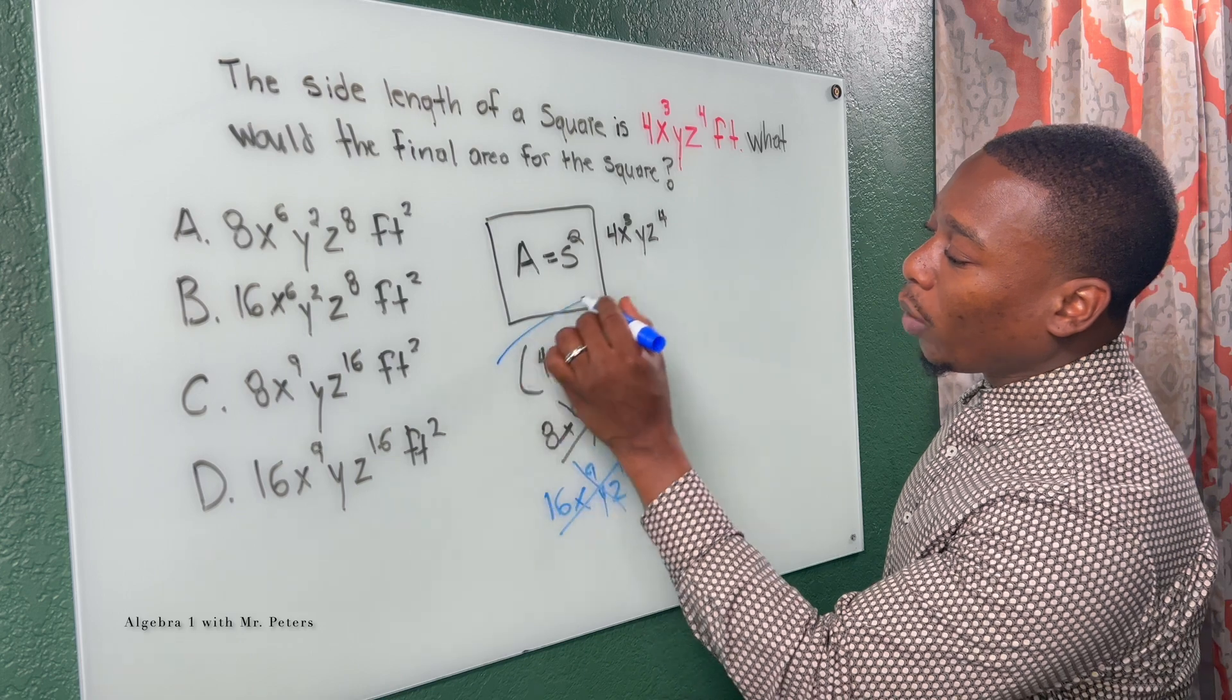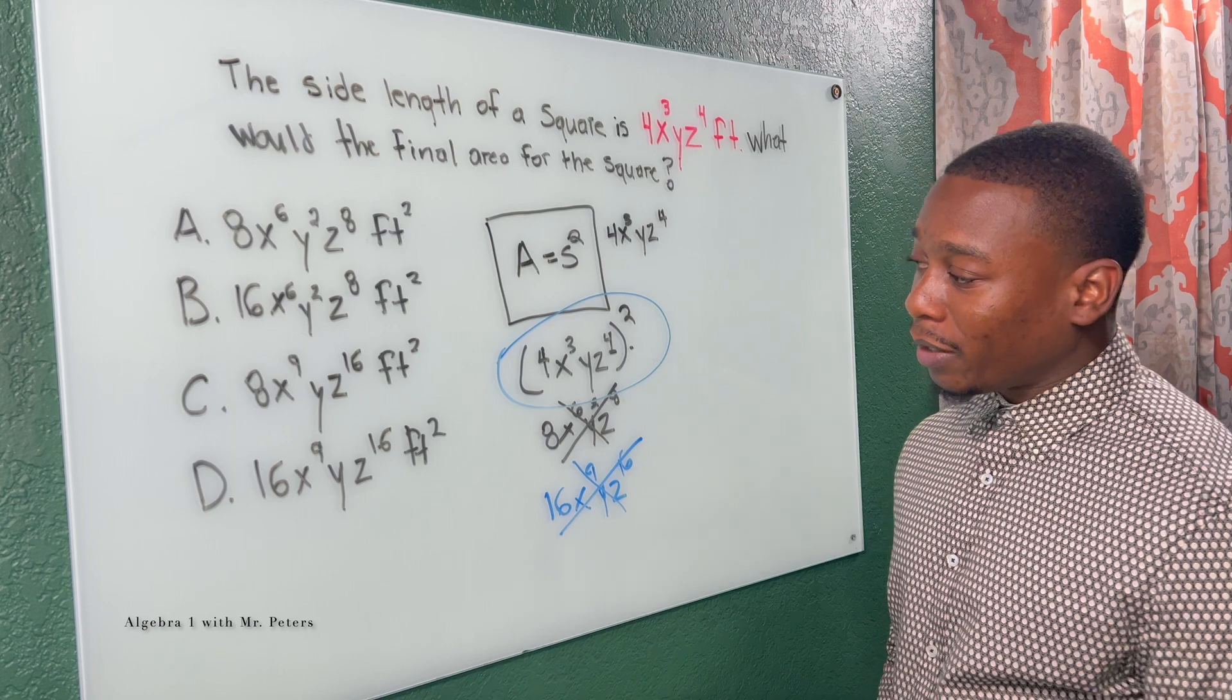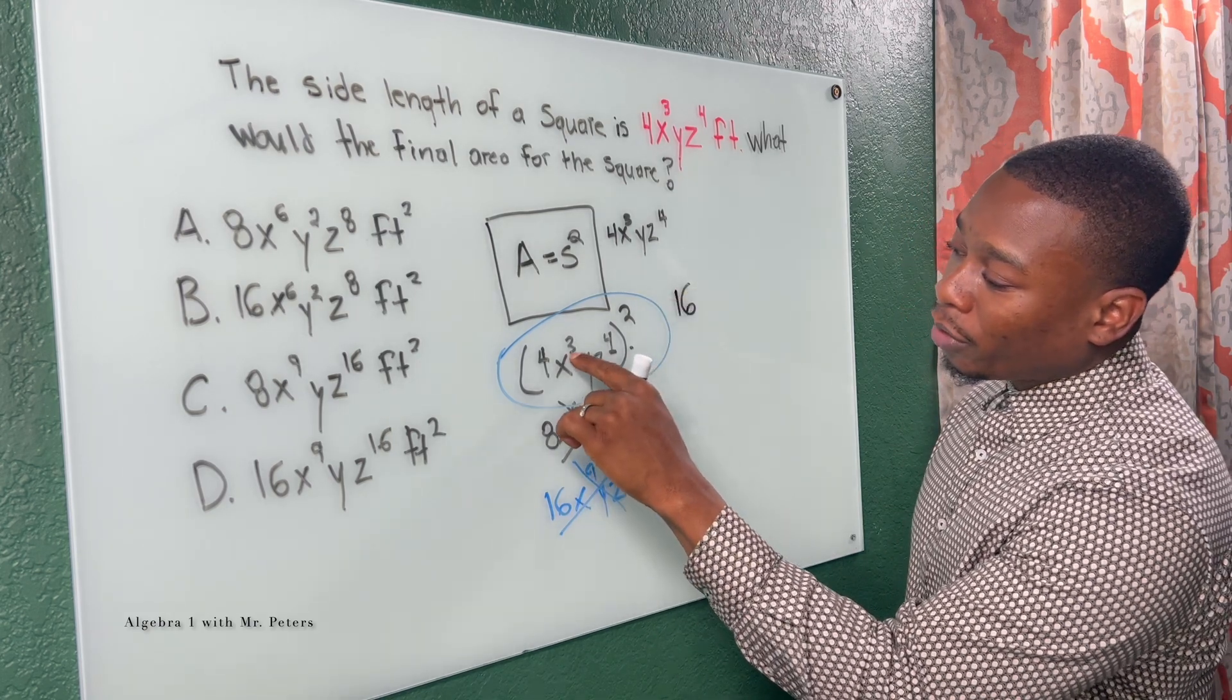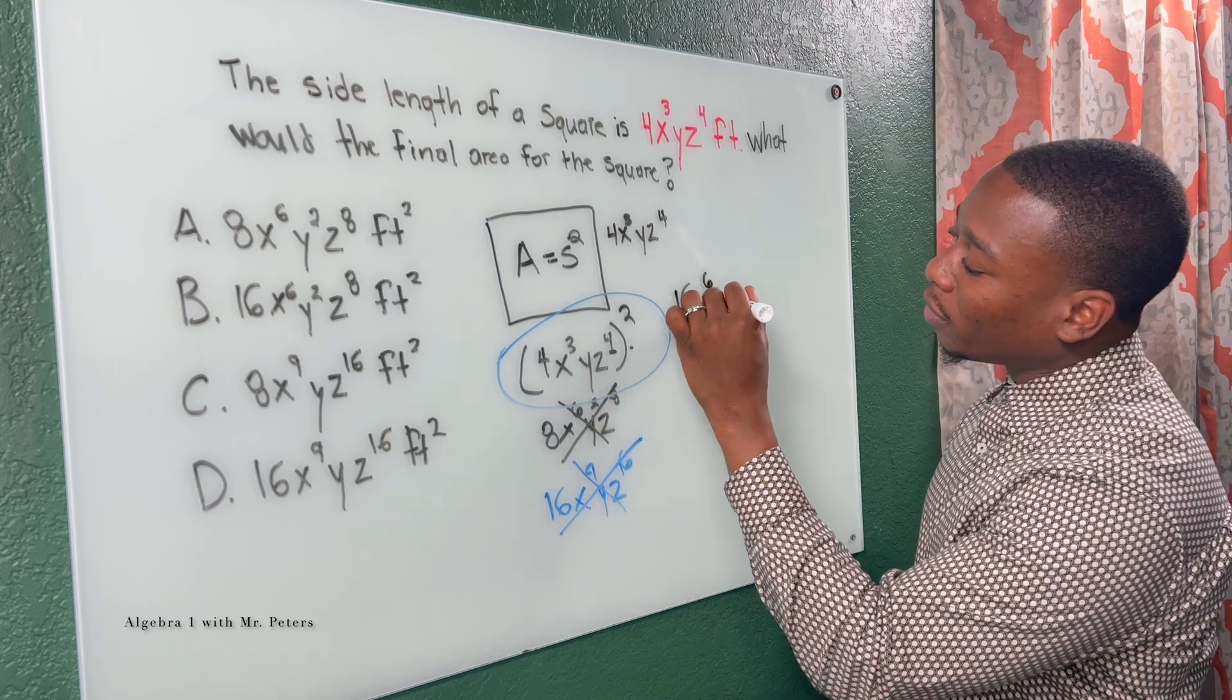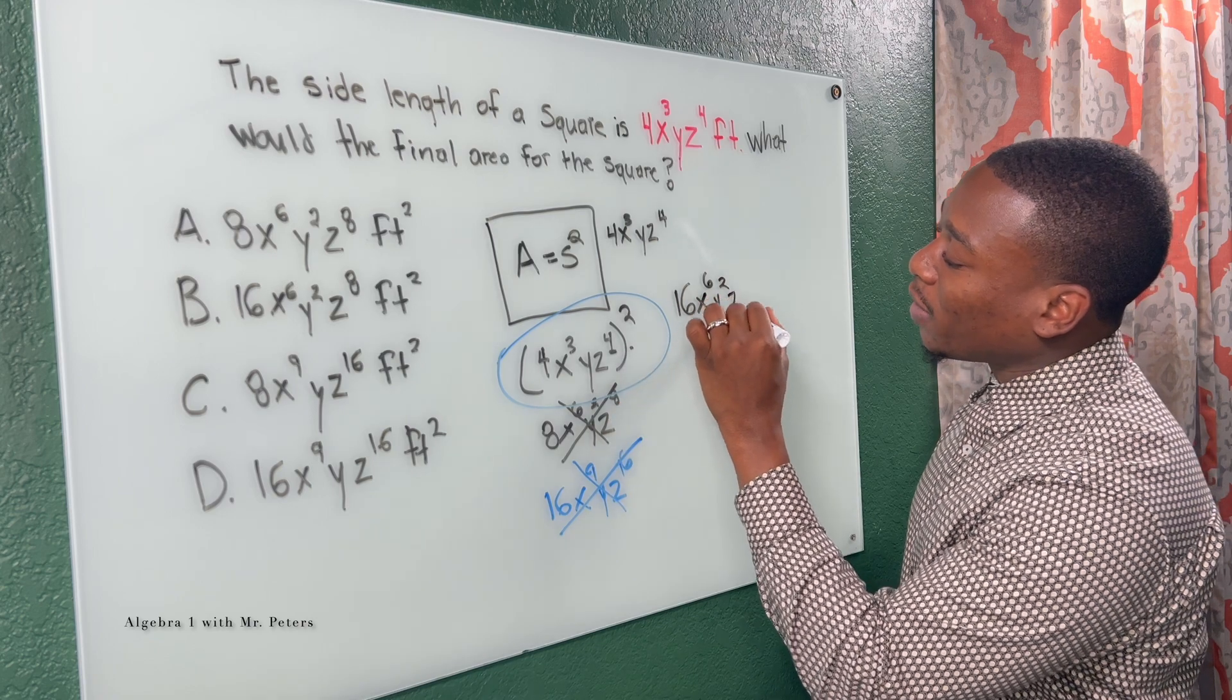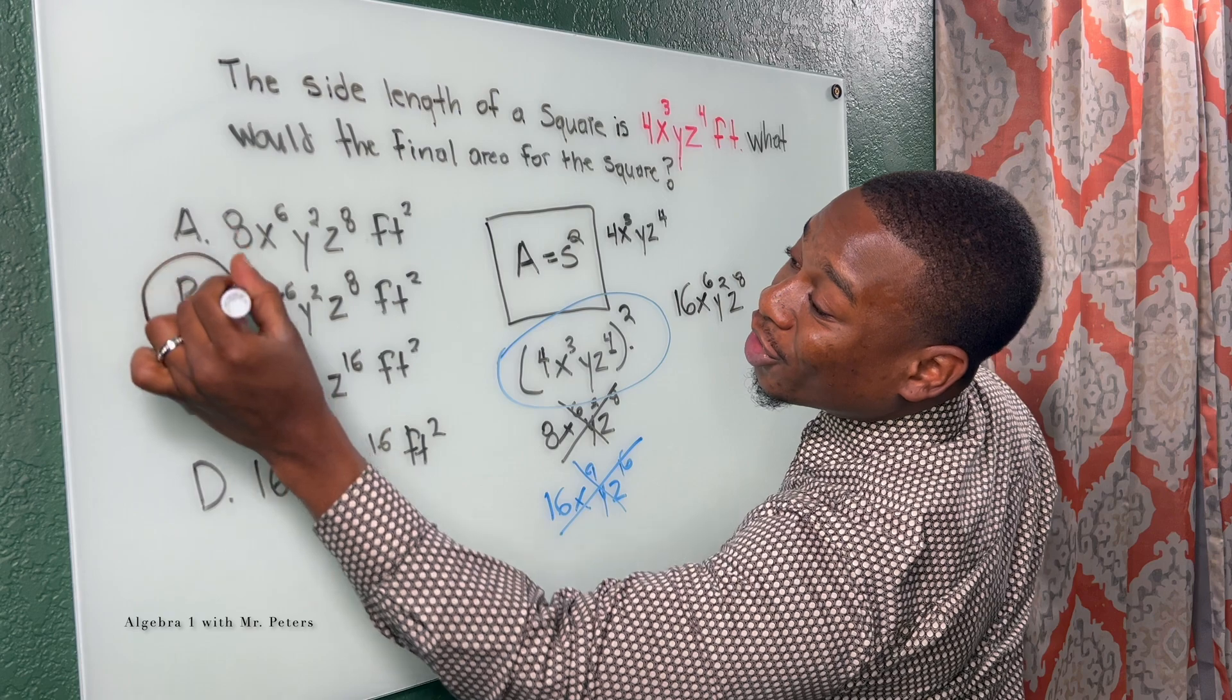Now, the correct way to do this is that we're going to square the coefficient, multiply the exponent. So four squared is 16, three times two gives me X to the sixth, Y to the first times two is Y squared, and four times two gives me Z to the eighth. So my actual correct answer should be B.